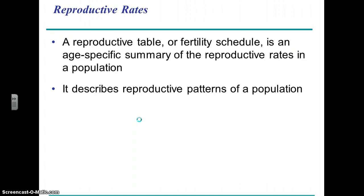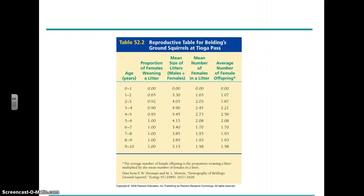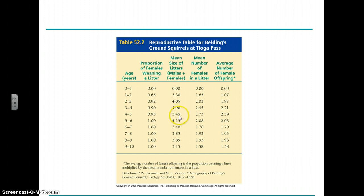Another component of demographics is reproduction. You can look at different cohorts and different ages to see when reproduction is occurring. For example, yearlings don't reproduce at all, but in the second year they start reproducing. They reach maximum reproductive output at four to five years, and then it begins to decline, though fertility continues until the last stages.